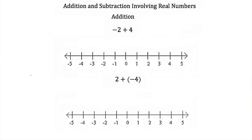Now let's talk about adding real numbers. Say we wanted to add negative 2 plus 4. Looking at our number line, we start at 0. Our first number is negative 2, so since it's negative we go left — two spaces — to negative 2. Now we want to add 4, and since we're adding a positive 4 we move to the right four spaces: one, two, three, four. We get to positive 2. So negative 2 plus 4 equals positive 2.